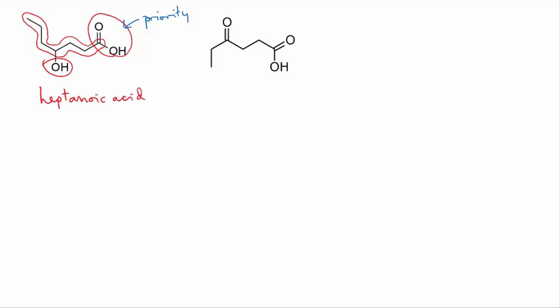And now we just have to treat the alcohol as a substituent. You'll see from your notes that when an alcohol group is not the priority group, it's known as 'hydroxy'. And in this molecule, it's on carbon number four, numbering from the right where the carboxylic acid is. So that gives us 4-hydroxyheptanoic acid.